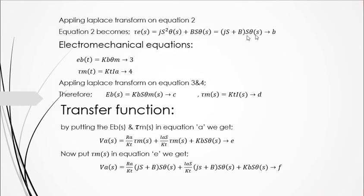For the electromechanical equations: the input is voltage (electrical input) and the output is mechanical, which could be speed or position control. The back-EMF is Eb(t) equals Kb·dθ/dt, and the motor torque is Tm(t) equals K·Ia(t). If armature current Ia increases then torque increases, and vice versa.